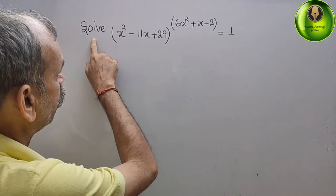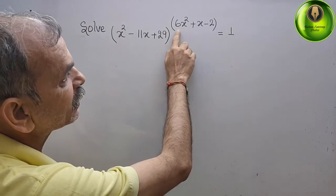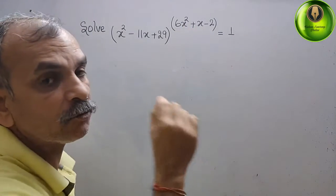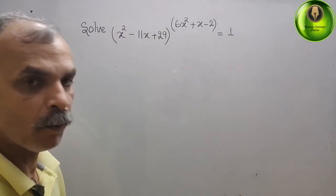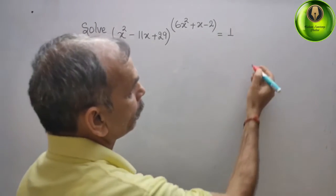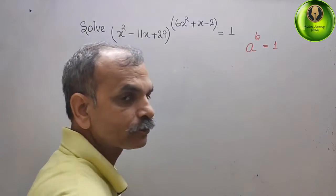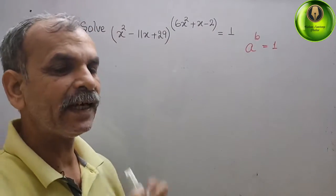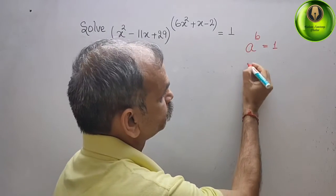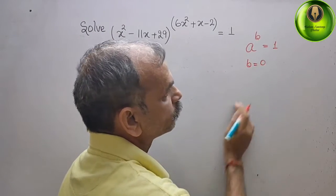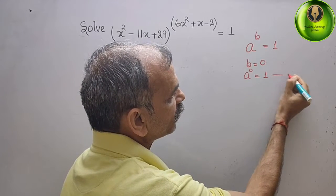The question is to solve (x² - 11x + 29) raised to the power (6x² + x - 2) = 1. This is in the form a^b = 1. There are three conditions to get the value 1. The first condition is: if b is equal to 0, then a to the power 0 gives you 1.